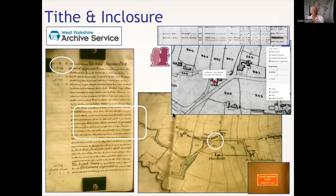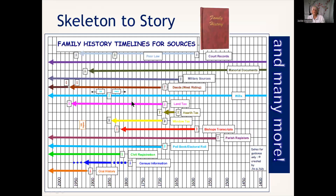Tithe and enclosure records are very much place-orientated record sets, but also telling about your person if you're lucky enough that they owned property. On the tithe you get lots and lots of field numbers to interpret. Enclosure records less so. Again, lots are coming online - one of the big things for The Genealogist - but don't forget to look at local archives too. So we're moving from a skeleton to a story.